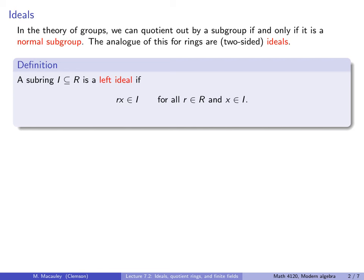Here's a definition. A subring I of R is a left ideal if all products of the form R times X, for something in R times something in I, remains in I. Right ideals and two-sided ideals are defined similarly. The way to think about this is: left ideals are subrings such that when you multiply the elements in the ideal on the left, you remain in the ideal.